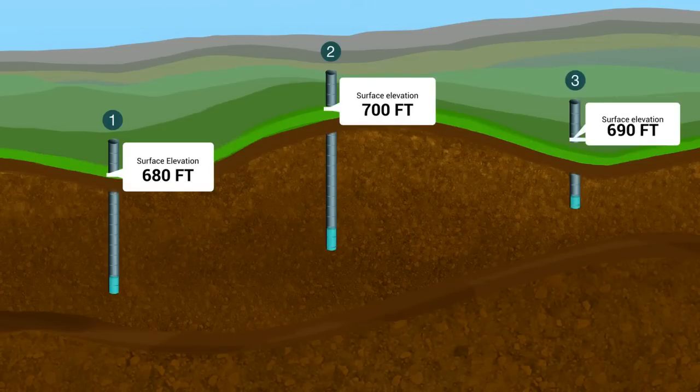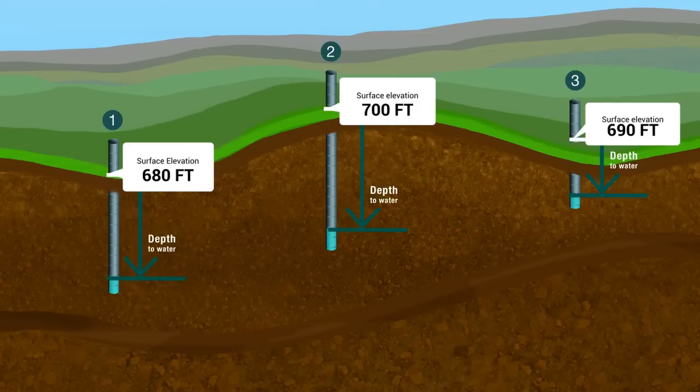Step two: determine which of the three wells has the highest water table level and which has the lowest. We calculate the difference in water table levels between each well by subtracting the distance to the water table of a well with the highest elevation, in this case well two, from the distance to the water table of a well with a lower elevation.